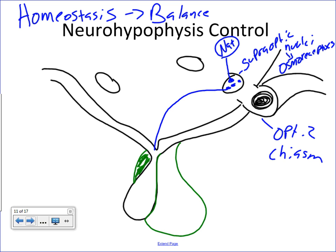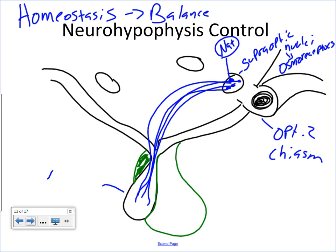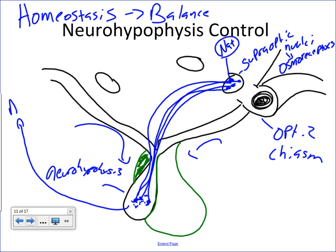These receptors have axons that project into the posterior lobe — the neurohypophysis, which is a downgrowth of the hypothalamus. These supraoptic nuclei project right into the posterior lobe. When we're dehydrated and these neurons become excited, that stimulates the posterior lobe to release a hormone called ADH, otherwise known as antidiuretic hormone or vasopressin. ADH travels to your kidneys and stimulates your kidneys to retain water.